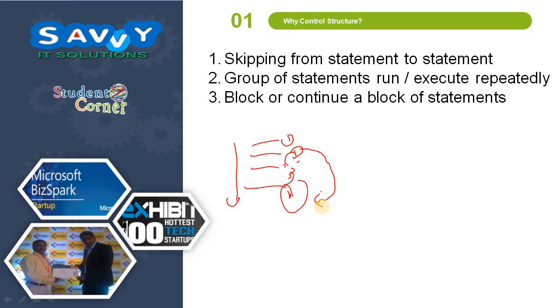Skipping from statement to statement is not at all possible in traditional programming. After introducing control structures, this can be solved. I will explain in detail in the next part.